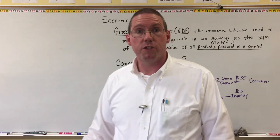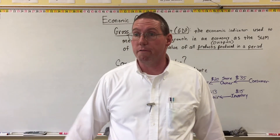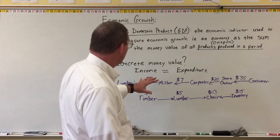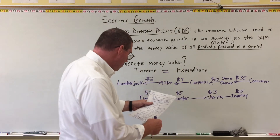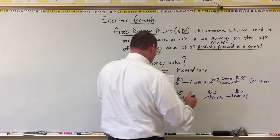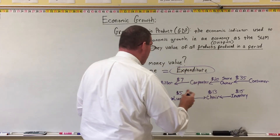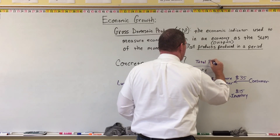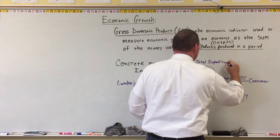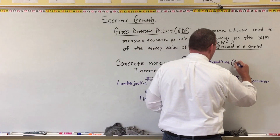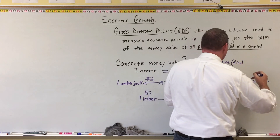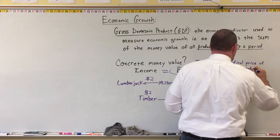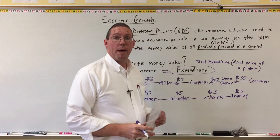There are errors in the calculation of GDP — it is not a perfect process, since we're calculating millions of products and trillions of dollars, so there are definitely inaccuracies. In this class, we are going to focus on the expenditure method. The expenditure method uses total expenditure, which is basically just the final price of a product. And now we're going to talk about total expenditure.